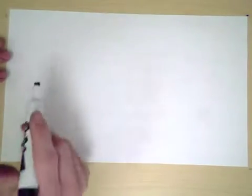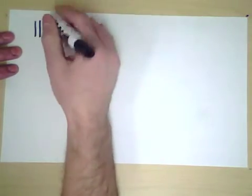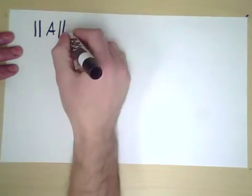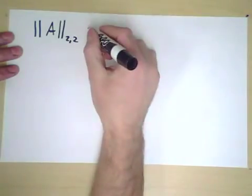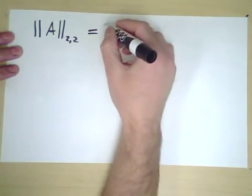So this is what we mean by the magnitude, the size, the norm of a matrix. Here's what we do. The magnitude of a matrix A, and I'll call this the norm, is, well, it's the max